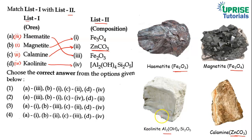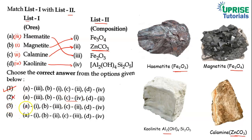Ab hum log apne options ki taraf badhte hain. First option mein diya gaya hai: A third par jayega, B first par jayega, C second par jayega, aur D fourth par jayega. To option first jo hai, vah sahi hoga. Option second mein C fourth par ja raha hai, jabki C ko second par jana chahiye, to option second wrong hai. Isi tarah third wale option mein A first par ja raha hai, jabki third par jana chahiye, to vah bhi wrong hoga.